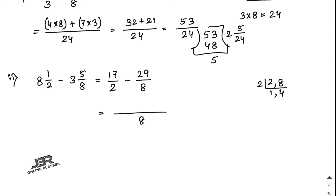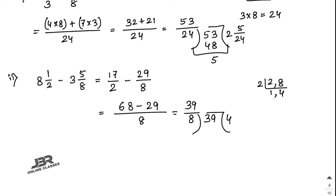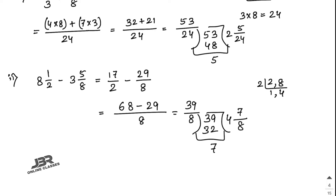2 divided by 8 gives 4, so multiply 4 by 17 to get 68. 8 divided by 8 gives 1, so write down 29. Now 68 minus 29 gives 39/8. Convert to mixed fraction: 8 times 4 is 32, remainder 7, so the answer is 4 and 7/8.